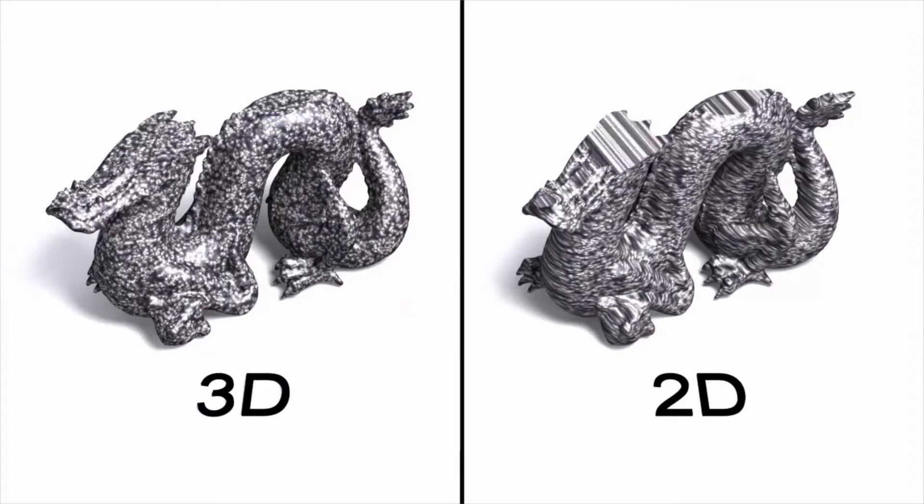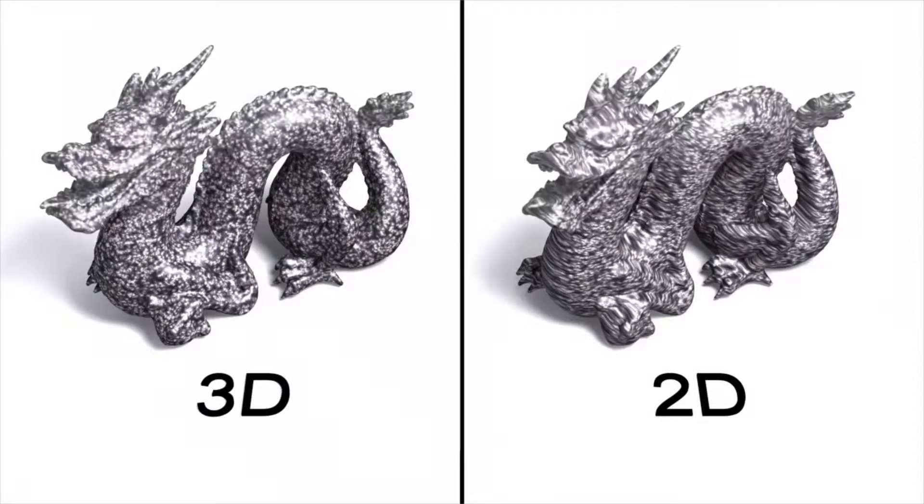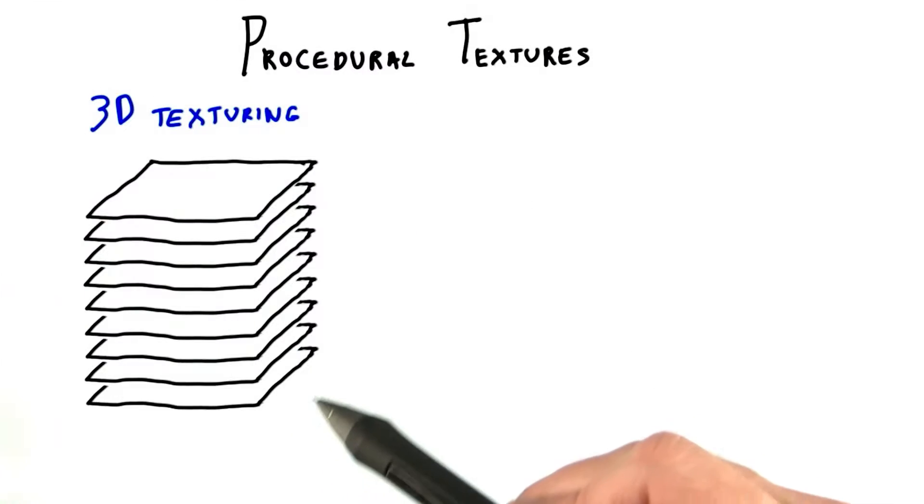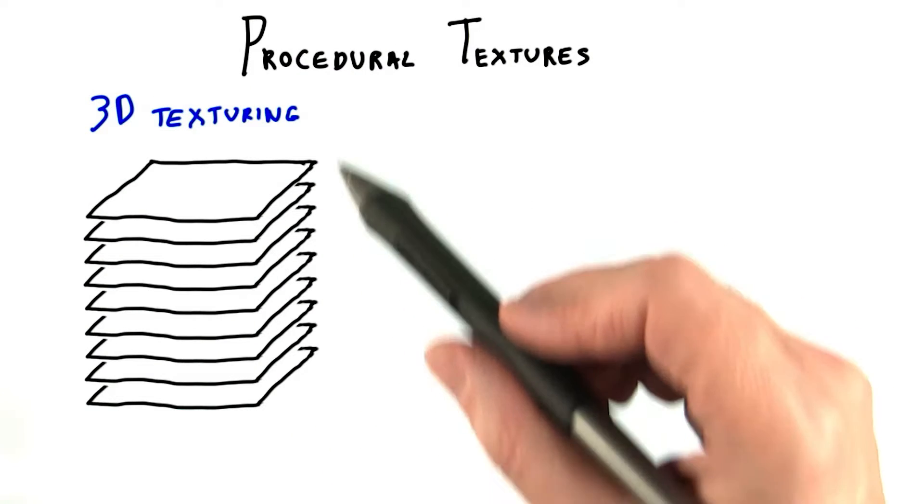What we'd like is something that's more like a real material. The solution is to create a 3D texture that fills space. One way to define this texture is to actually create something like a stack of images.